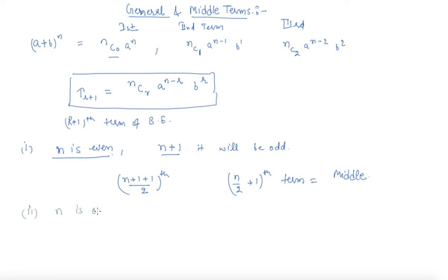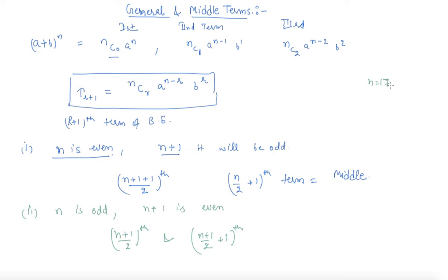The second case is when n is odd, so n plus 1 is even. There will be two middle terms when n is odd. The two middle terms are the (n+1)/2 th term and the (n+1)/2 + 1 th term. For example, if n is 17, there will be two middle terms: one is the 9th term — since (17+1)/2 = 9 — and the other is the 10th term. There will be 18 terms in the expansion, so the 9th and 10th are the two middle terms.